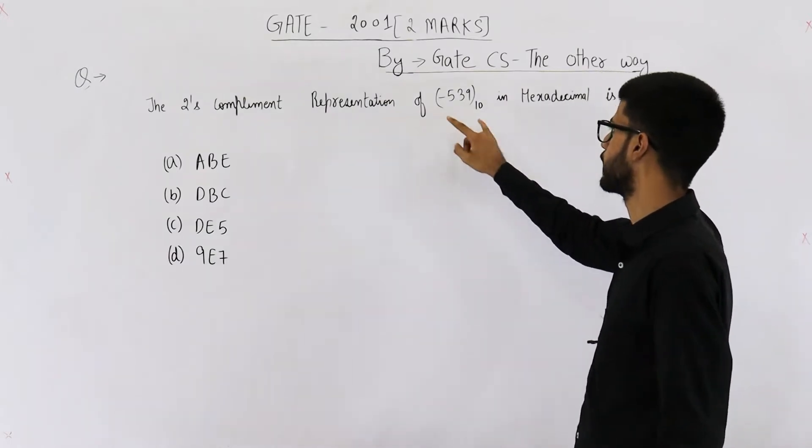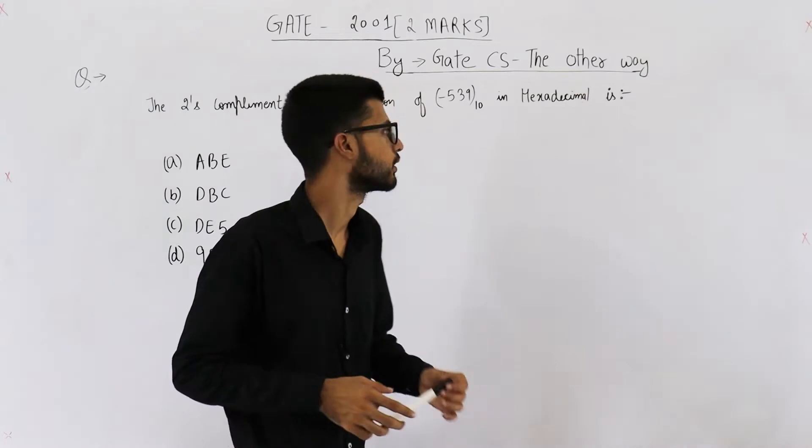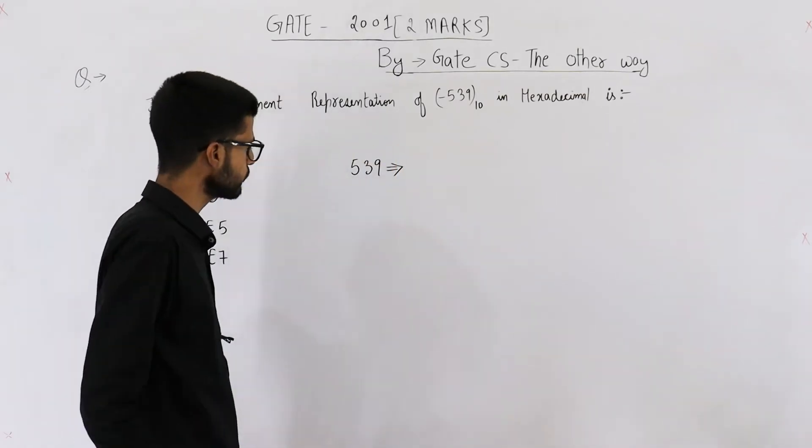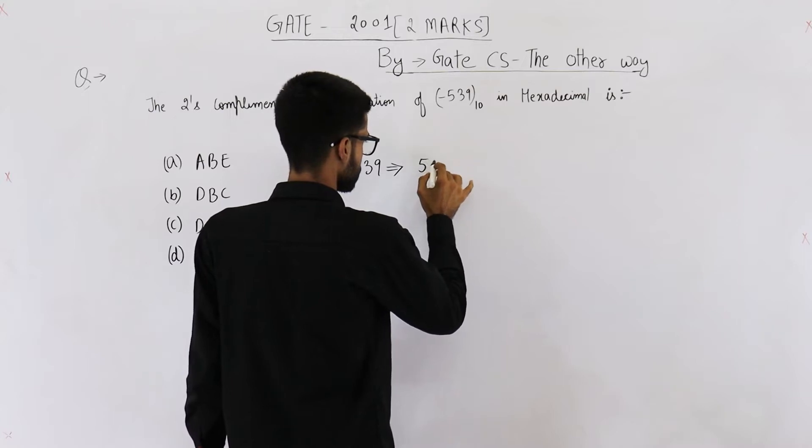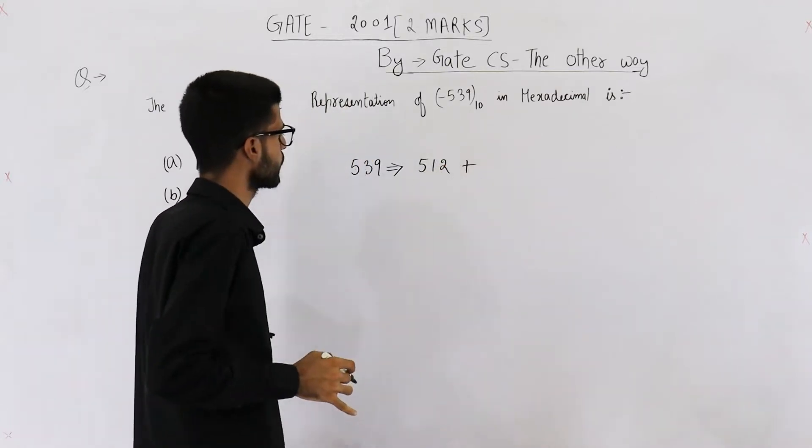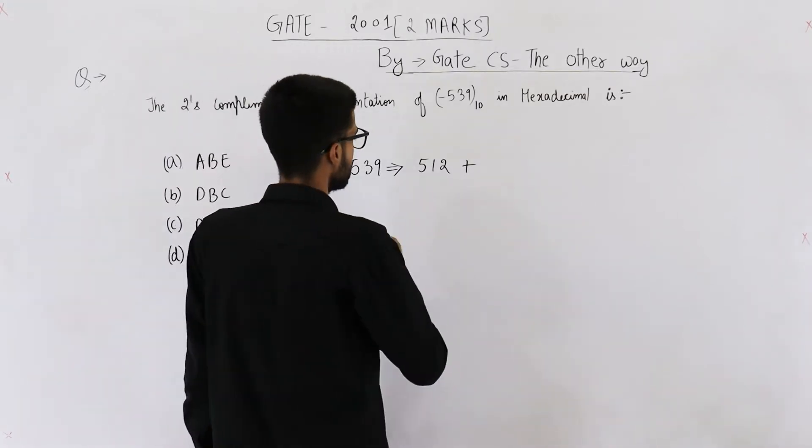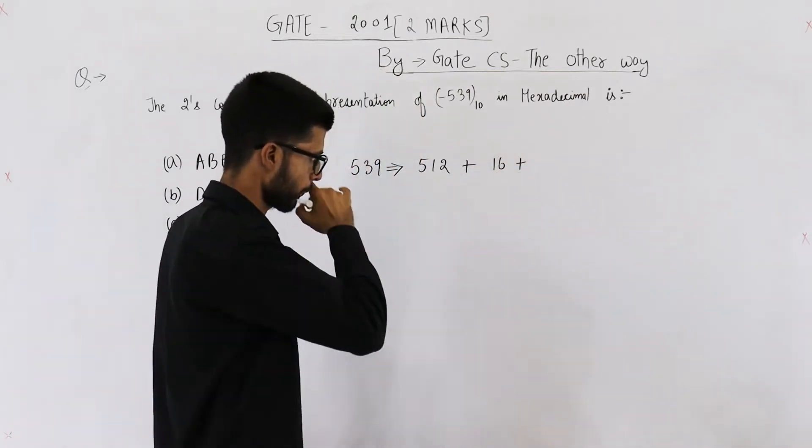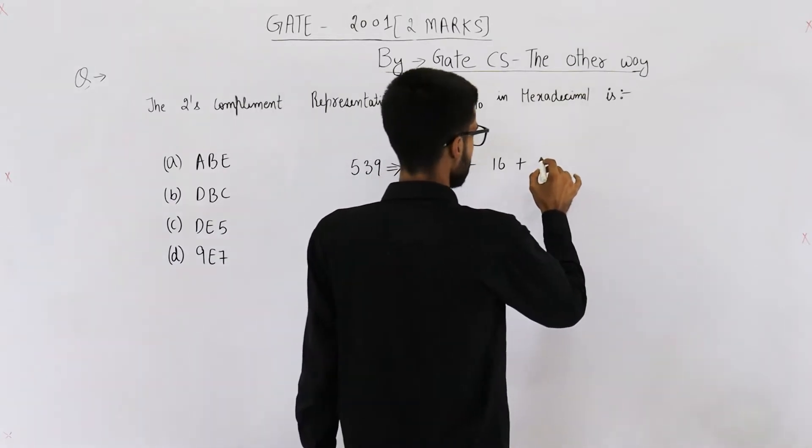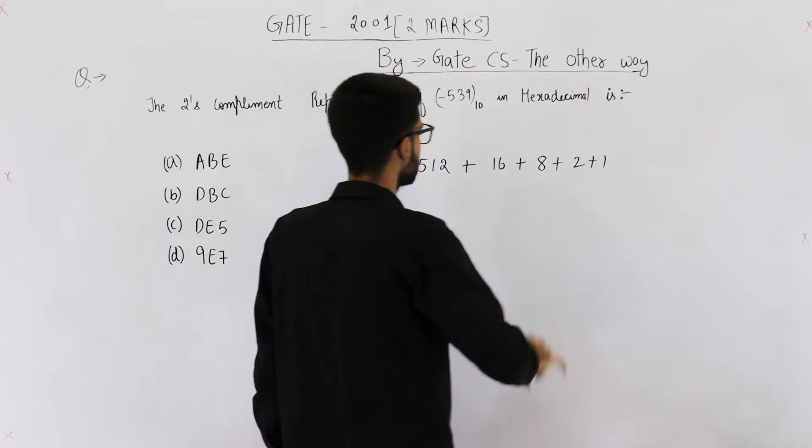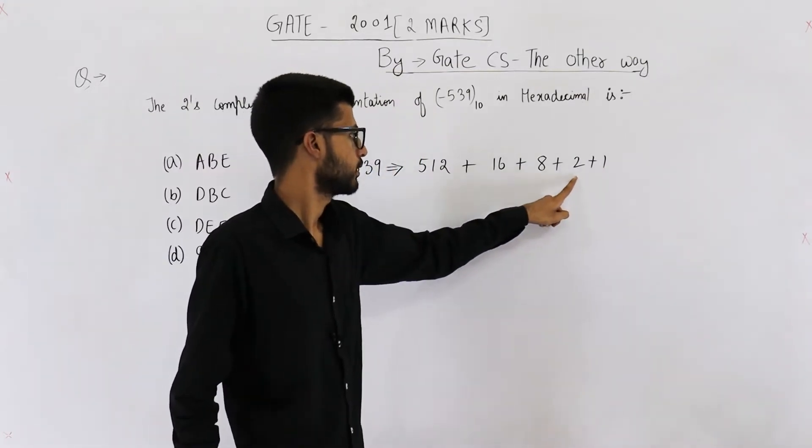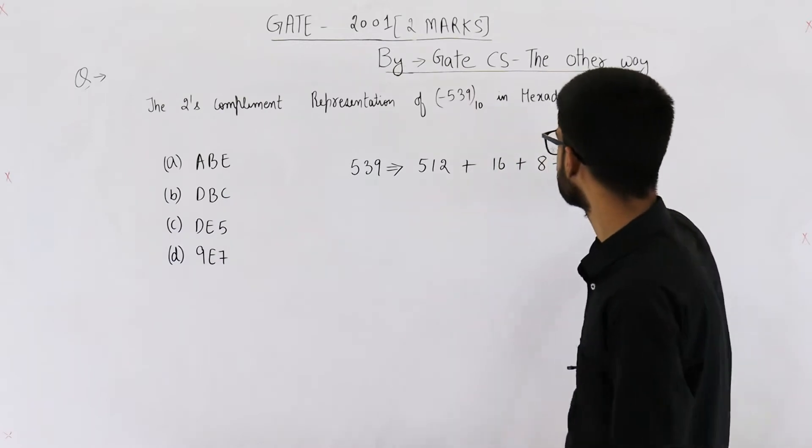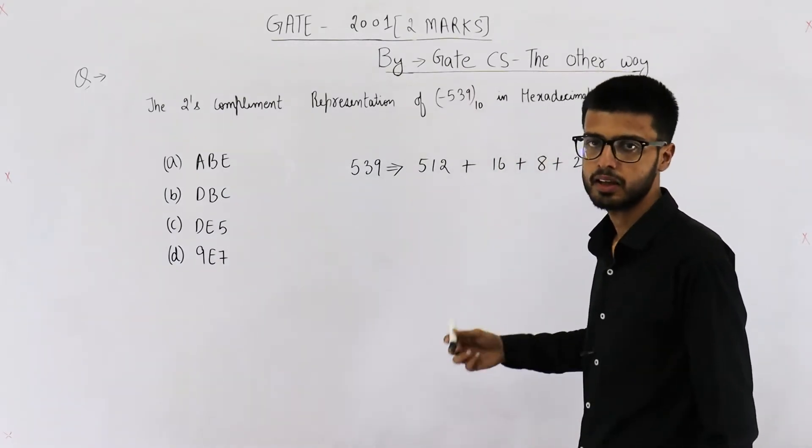So first of all, let's find two's complement representation of plus 539. So 539 can be written as 512 plus 27. Then 27 can be written as 16 plus 8 plus 2 plus 1. 3 plus 8 is 11, 11 plus 16 is 27. So this is how you can write 539 in powers of 2.